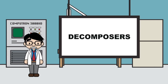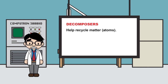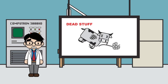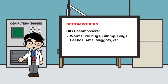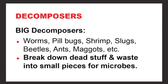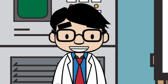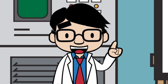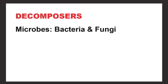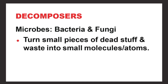Let's talk more about decomposers. They help recycle matter — essentially, atoms. They break down dead stuff or waste. Big decomposers like worms, pill bugs, shrimp, and slugs help break down large pieces of dead stuff and waste into smaller pieces. Worms do an excellent job of breaking things down in the soil for microbes. Microbes, or microscopic decomposers, like bacteria and fungi, will turn small pieces of dead stuff and waste into small molecules and atoms that are released into the environment.